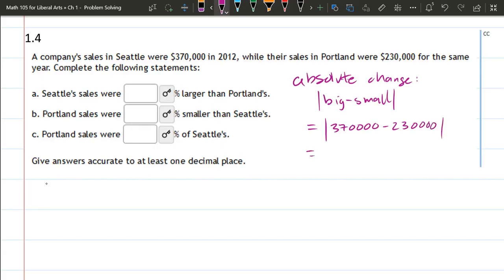So we do this subtraction. Let's see, that's a large number. 37, four zeros. Subtract. Four. All right, there we go. This is positive. All right, that's the absolute change.